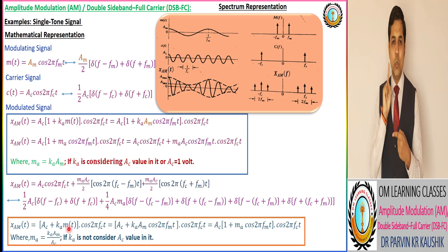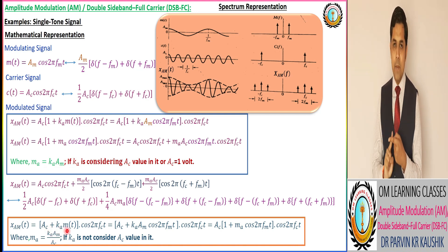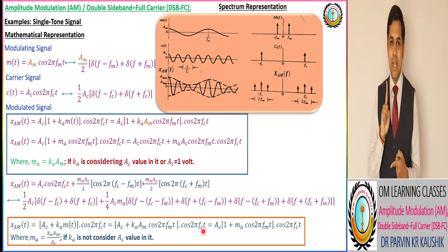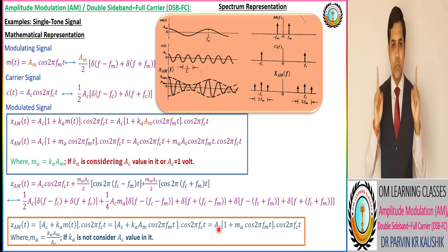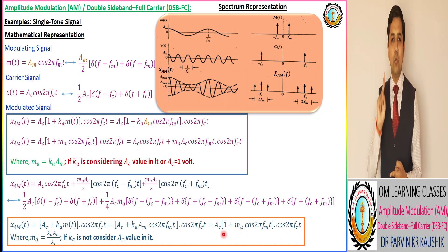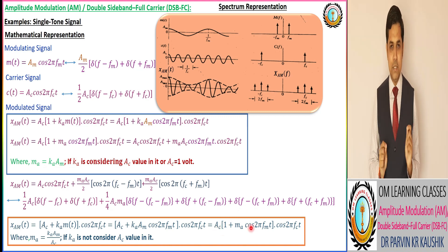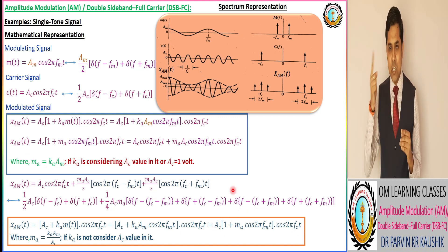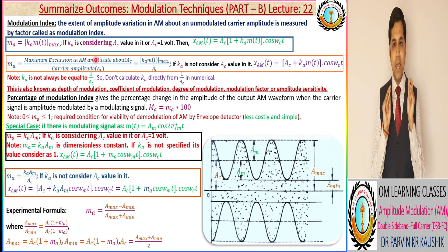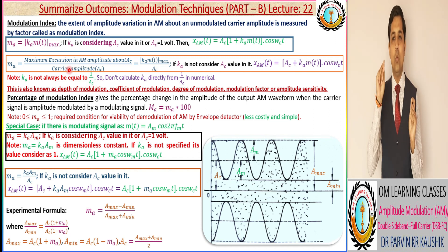The AM modulated wave for single tone is equivalent to [Ac + Ka·Am cos(2π fm t)] cos(2π fc t). By taking Ac outside from the bracket and utilizing the formula of modulation index Ma = Ka·Am / Ac, we get the modulated AM wave equivalent to Ac [1 + Ma cos(2π fm t)] cos(2π fc t). Very important point: comparing both representations, this final form is equivalent, but Ka is not always equivalent to 1/Ac.